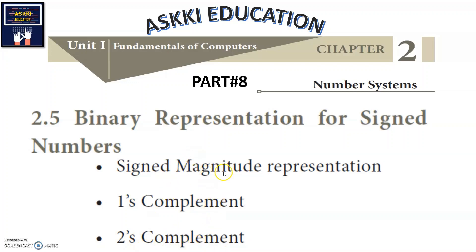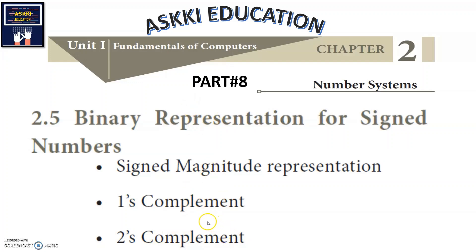In signed notation, negative numbers are represented individually. In one's and two's complement, addition and subtraction are handled individually. In this video, we will see binary arithmetic — addition and subtraction — including one's complement subtraction and two's complement subtraction. Please subscribe to the channel and share with your friends.